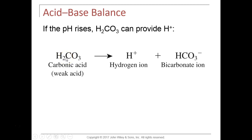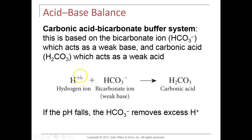If the pH is too low and we have too much hydrogen in the blood, hydrogen can bind to monohydrogen phosphate, producing dihydrogen phosphate. That hydrogen is now bound to the phosphate and is no longer free acid in the fluid — it's been buffered. Once hydrogen binds to monohydrogen phosphate, it is pulled out of solution, causing the pH to come back up.